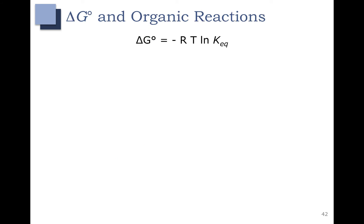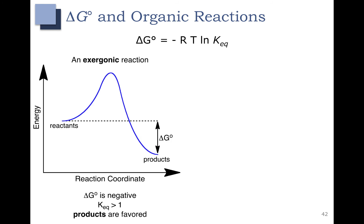Now let's look at delta G in our organic reactions. Let's look at a reaction coordinate diagram for an exergonic reaction. An exergonic reaction is going to release energy — this is our spontaneous reaction. The reactants are higher in energy than the products. So this is our delta G naught, our change in energy for the reaction. Notice that delta G naught is negative, meaning that Keq is big. In this situation, the products are favored. This is our downhill situation.